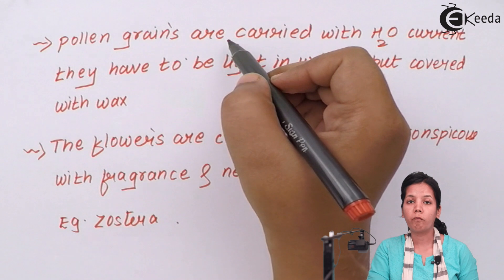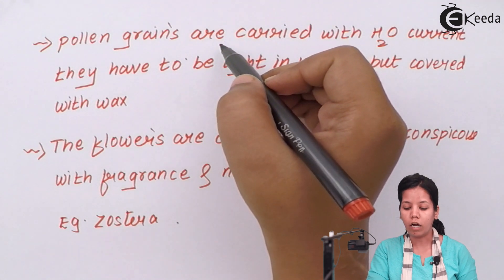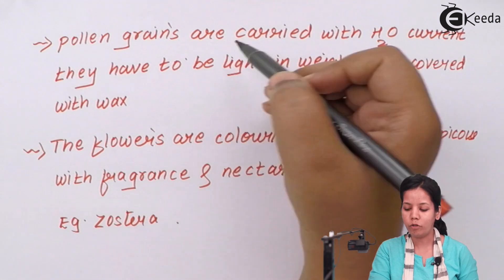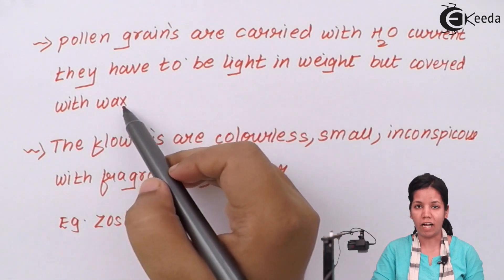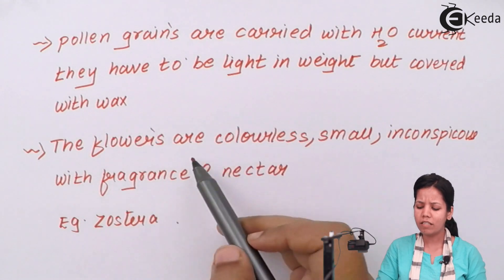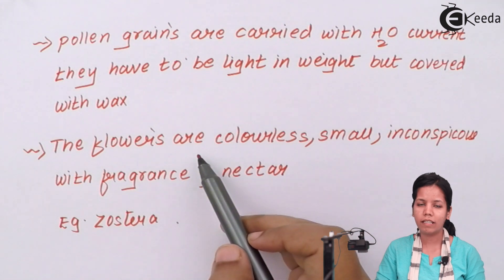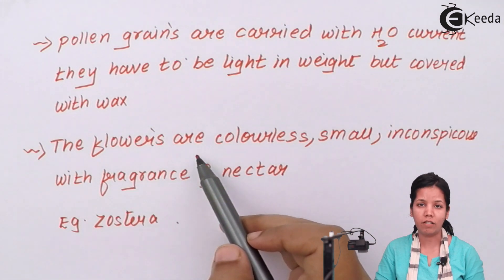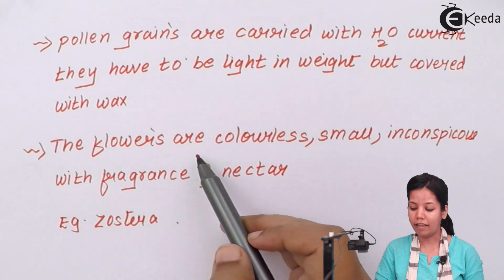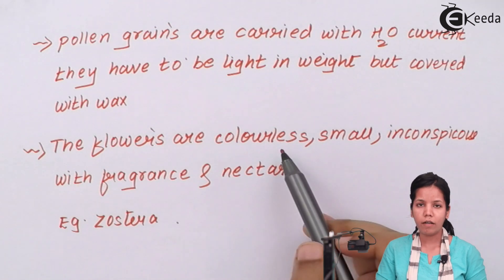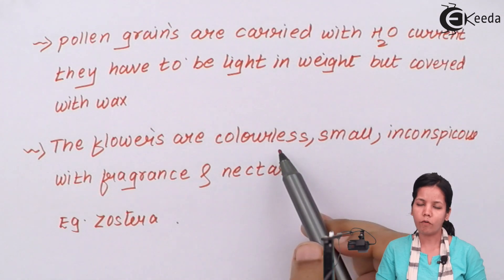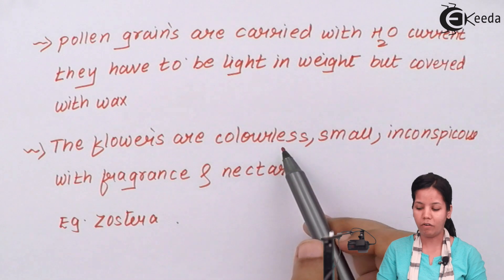For hydrophily to occur, the pollen grains have to be light in weight and covered with a waxy coating. The flower does not need fragrance — water does not need the fragrance of a flower to carry pollen — neither does there need to be nectar or any edible material present inside the flower. A colorless flower would also work for the process of hydrophily.